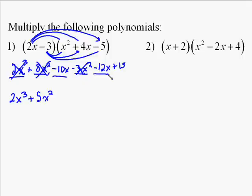Then I've got a negative 10x and a negative 12x. Negative 10x plus negative 12x is a negative 22x. And then finally, we're left with the positive 15. The final answer is 2x cubed plus 5x squared minus 22x plus 15.